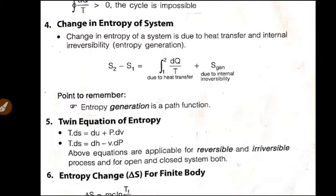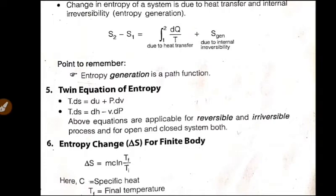So next one, the twin equations of entropy. TDS equations: TDS is equal to DU plus PDV, that is internal energy plus PDV. That is enthalpy minus VDP. These equations are applicable for both reversible and irreversible process for open and closed system.